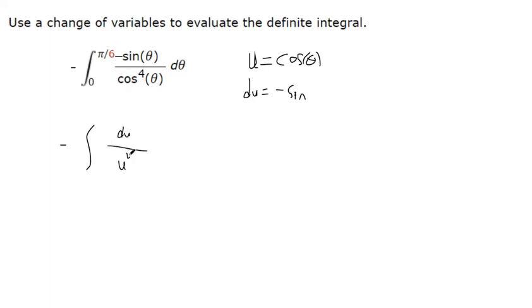Now this is with respect to u's, because if cosine is u, this is cosine to the fourth, so that's u to the fourth.